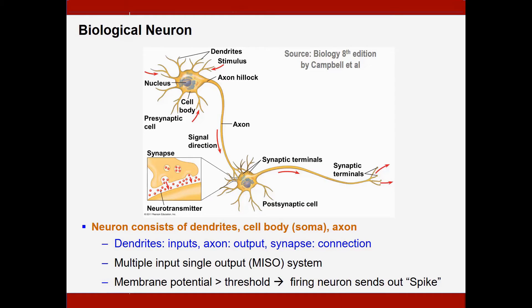Before we talk about the neural networks, let us first take a look at the biological neuron. As shown in this figure, a biological neuron consists of many dendrites, a cell body, and also an axon. The connection between two neurons is called the synapse. Obviously, a biological neuron is a multiple input, single output system. The neuron can receive stimulation from the dendrites, so the membrane potential or the membrane voltage of the neuron can be increased. When the membrane potential is higher than a threshold, this neuron fires and sends out a spike to the axon.